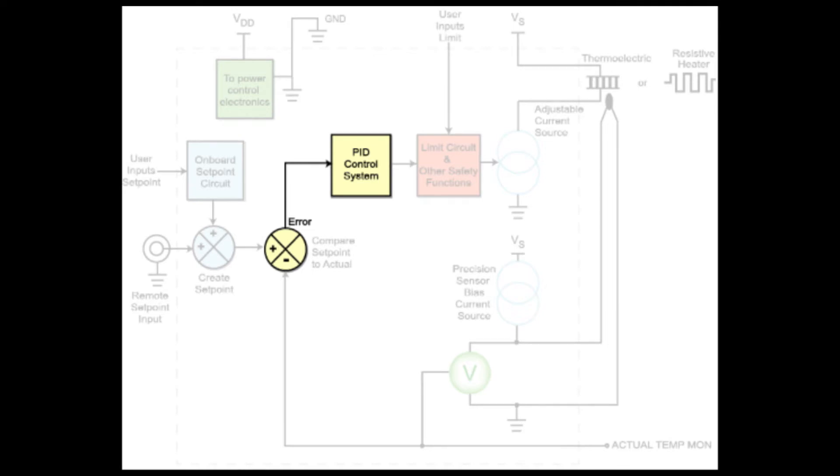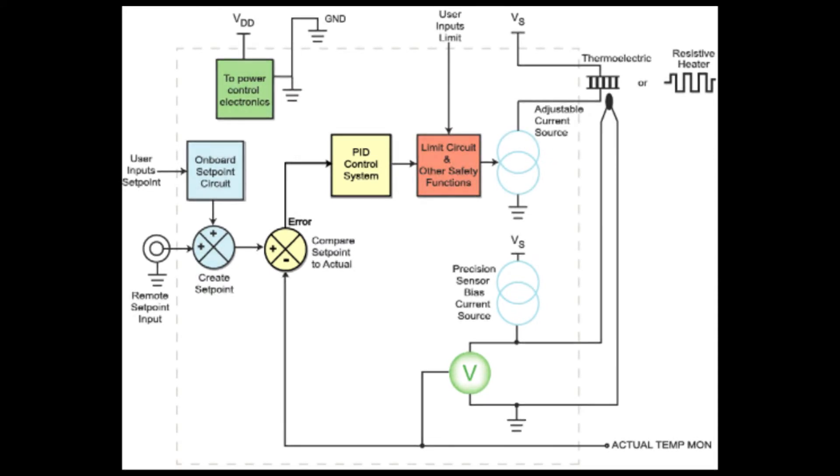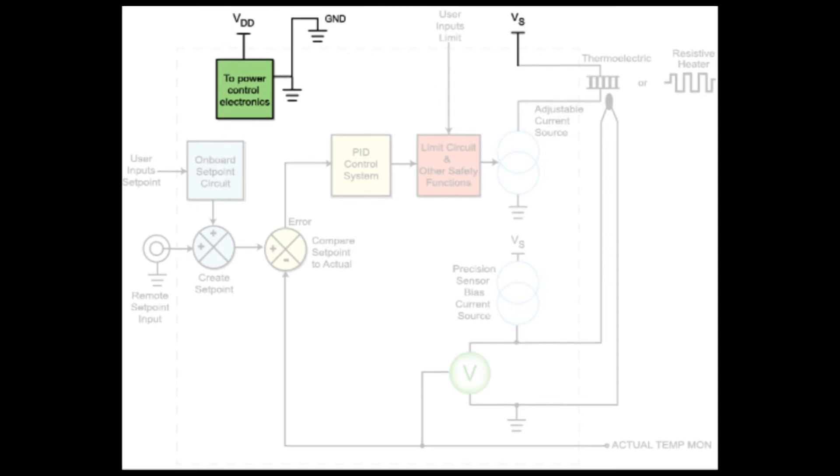Power must be provided to the control electronics and current source. This can take the form of a DC power supply for an OEM module or AC input for an instrument. Designing a temperature control system includes choosing the power supply.